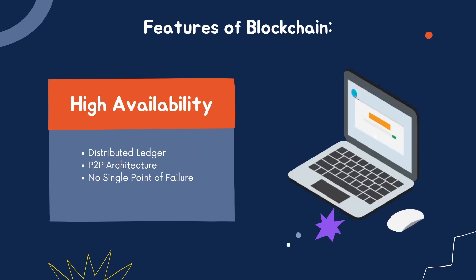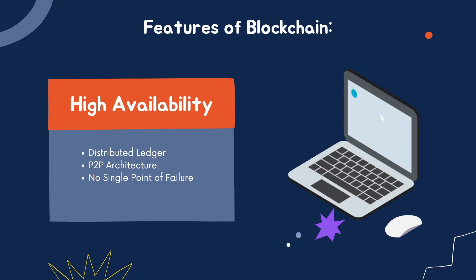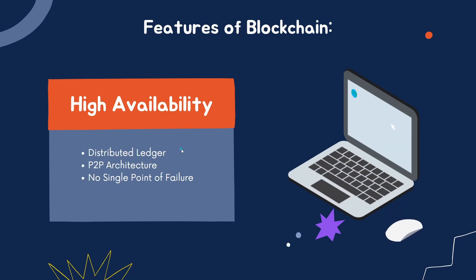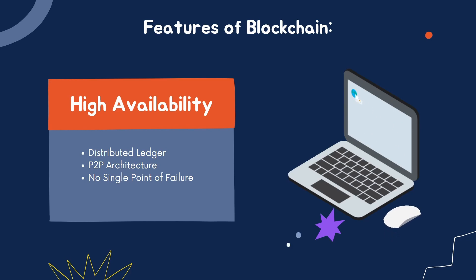The fifth feature is high availability. It has three aspects: distributed ledger, peer-to-peer architecture, and no single point of failure. The ledger is distributed across the globe and nodes that hold a copy of the ledger keep the network up, making it highly available. This also means there is no single point of failure — there is no central server that can go down and take the entire network with it. Nodes are running all over the world using peer-to-peer architecture.